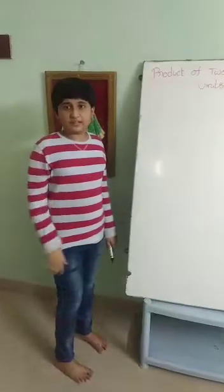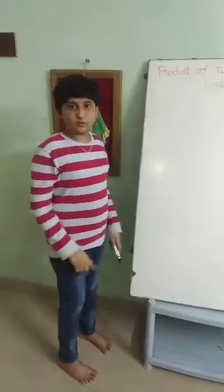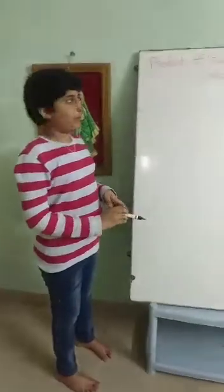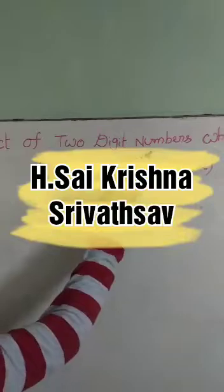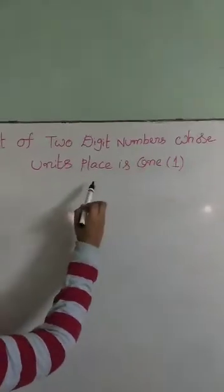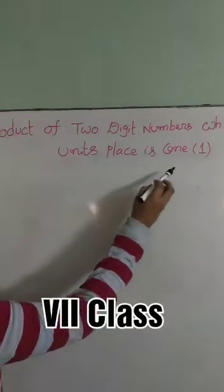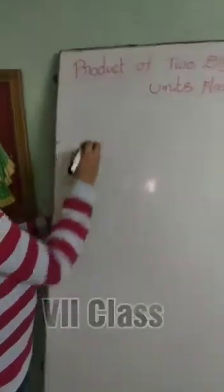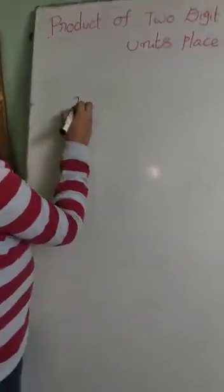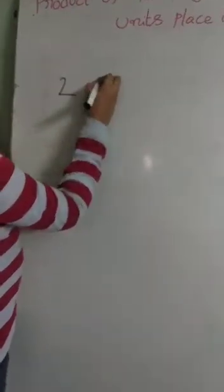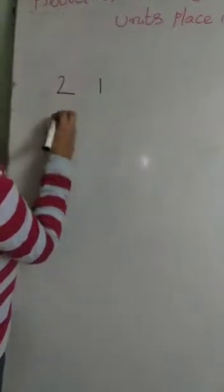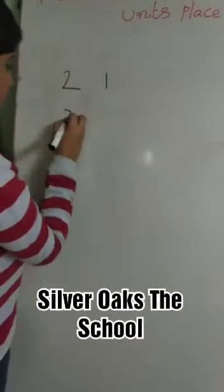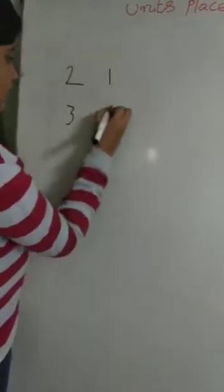Hi friends, my name is Aynes Asliwaza. Today I am going to talk about the product of two-digit numbers whose unit place is 1. Let us have an example: 21 into 21.